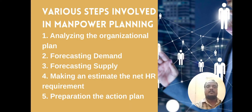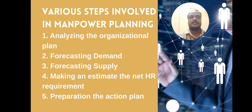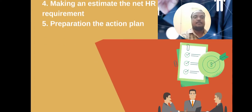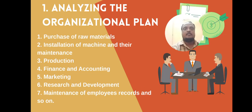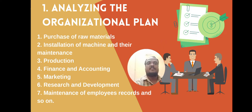Various steps involved in manpower planning: first, analyzing the organizational plan — this includes purchase of raw material, installation of machines and their maintenance, production, finance and accounting, marketing, research and development, and maintenance of employee records.